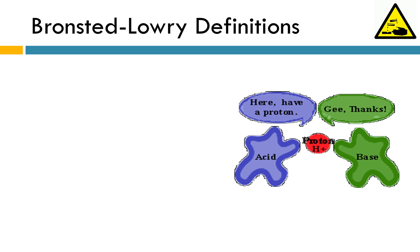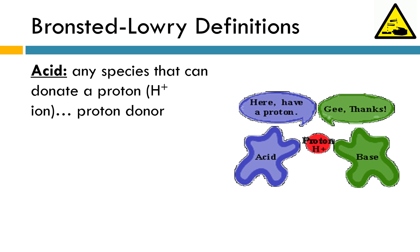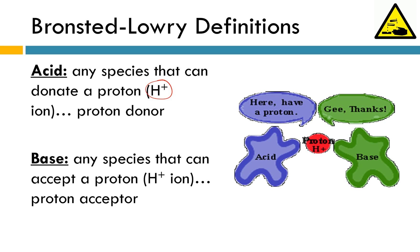Bronsted-Lowry definitions of acids and bases are a little bit different from Arrhenius, and that's going to help us explain why a molecule like NH3 behaves as a base. According to the Bronsted-Lowry definition, an acid is any species that can donate a proton — sometimes more simply called proton donors. This definition is really exactly the same as an Arrhenius acid. Where the change comes into play is with bases. Previously, we were defining bases as something that releases OH- ions into solution. According to the Bronsted-Lowry definition, a base is any species that can accept a proton — more simply called proton acceptors.